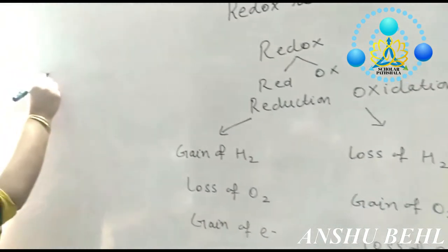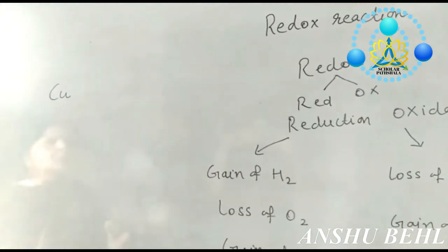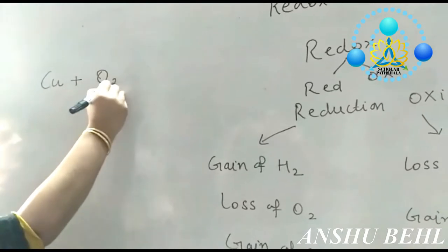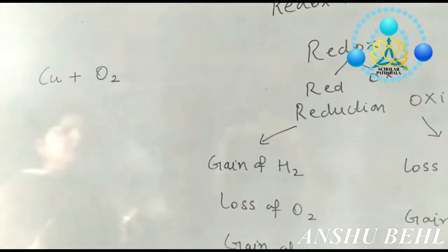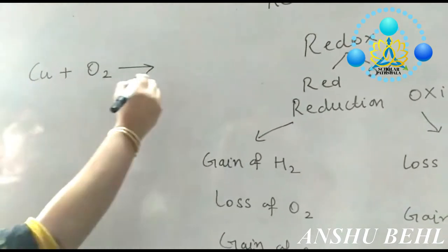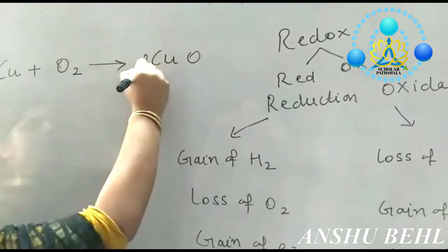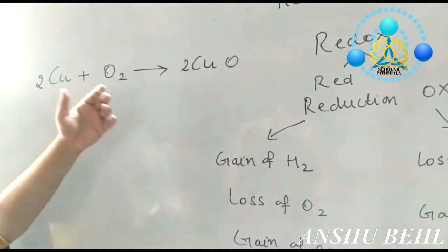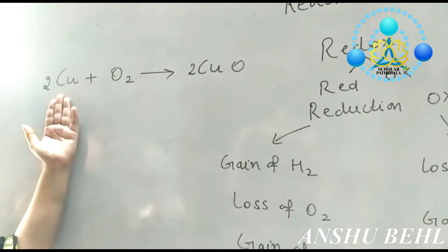Now we can move to an example. We can take copper metal turnings and heat them in the presence of oxygen. When you burn it in the presence of oxygen, the reddish-brown color of copper will turn to black. You will get copper oxide. This reaction is called oxidation of copper.